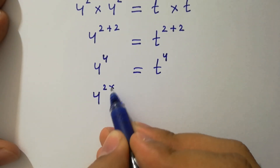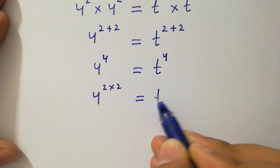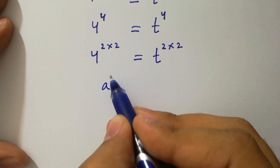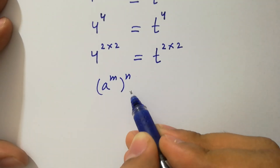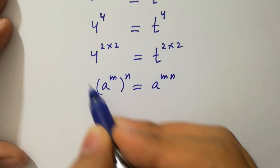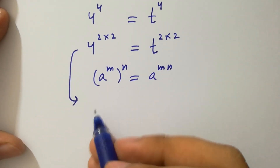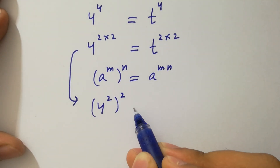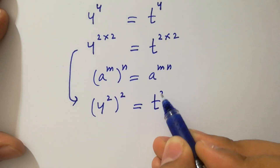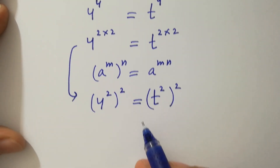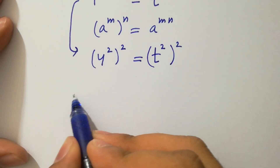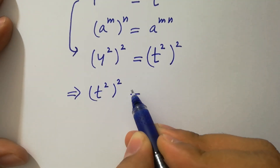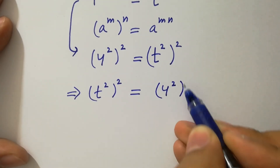Since 4 is 2 times 2, and using the rule a to the power m to the whole power n equals a to the power m·n, we can write this as 4 squared to the whole power 2 equals t squared to the whole power 2.